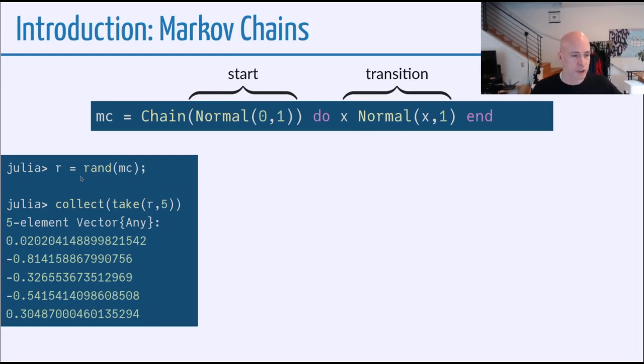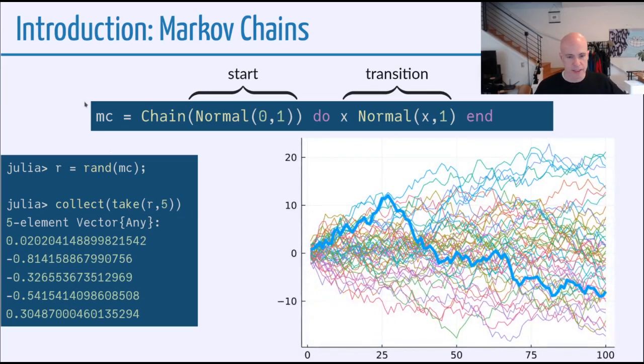So if we draw a sample from this, let's say r equals rand(mc). Again, this is an infinite sequence. So we can't look at all of the values, but we can take, for example, the first five. And if we collect the first five, we just get a vector of these five values. And this is what lots of different calls to rand would look like if we look at the first 100 elements.